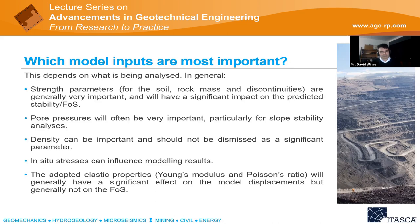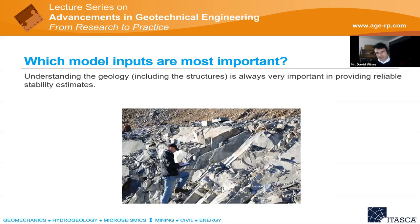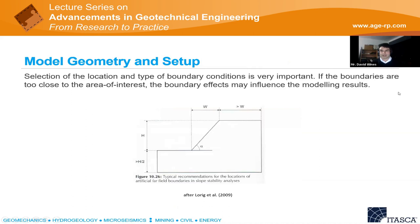The adopted elastic properties — Young's modulus and Poisson's ratio — will often have a significant effect on model displacements but not so much on the factor of safety, depending on the constitutive model used. Elastic properties may have more effect with strain-softening models. Understanding the geology and structures is always extremely important. I've seen many cases where slope failures in hard rock environments weren't predicted by modeling because the key structures that controlled the failures hadn't been identified and weren't in the model.